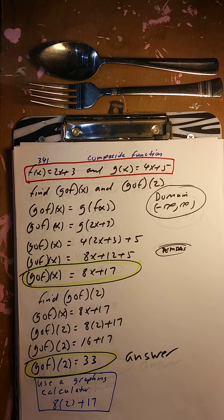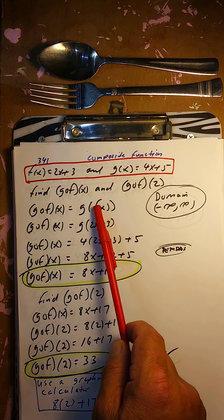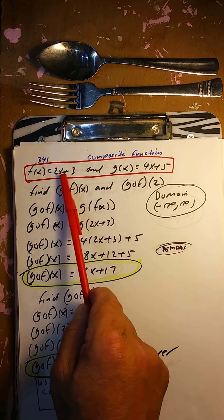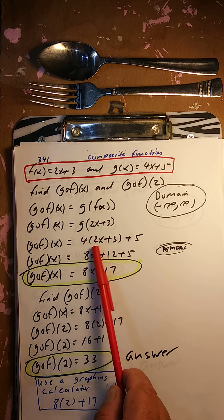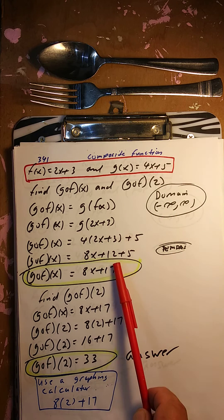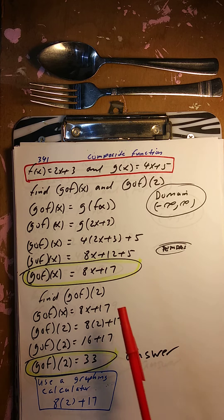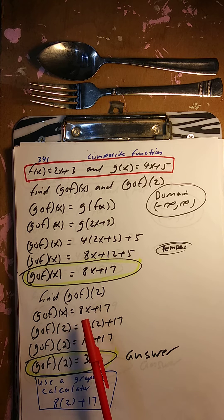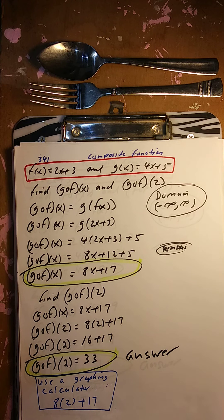g circle f of x, or g composite f of x, means g of f of x. So f of x, which is 2x plus 3, goes inside g. So 4 times the quantity 2x plus 3, plus 5. That gives 8x plus 12 plus 5, which is 8x plus 17. For g circle f of 2: 8 times 2 is 16, plus 17 is 33. So g circle f of 2 equals 33. Domain is all real numbers.